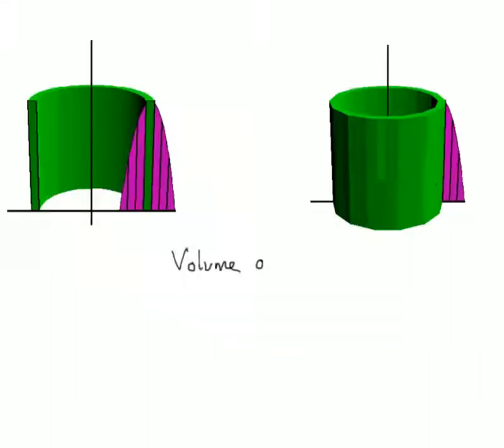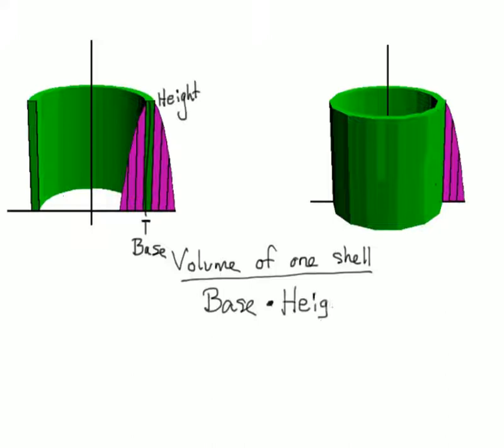Time to tackle the math happening behind the idea. We will first find the volume of a single cylinder. These are also called cylindrical shells, or just shells for short. The volume of a super thin shell is going to be the base times the height times the circumference of that cylinder.